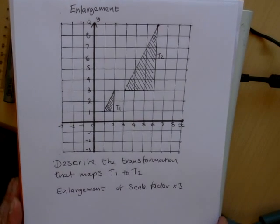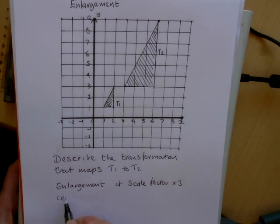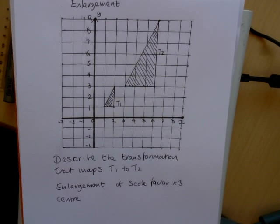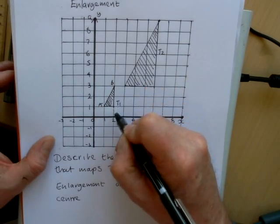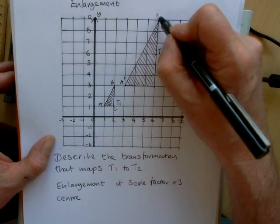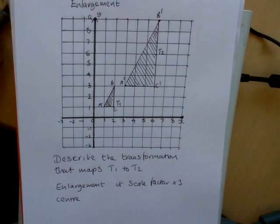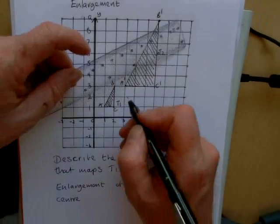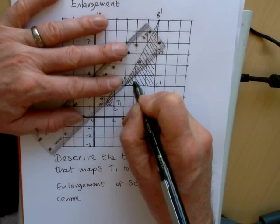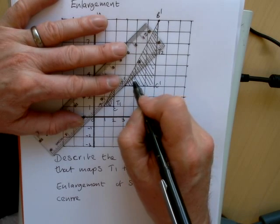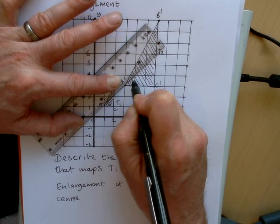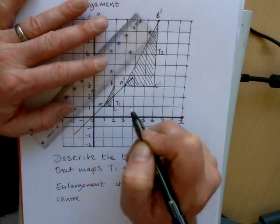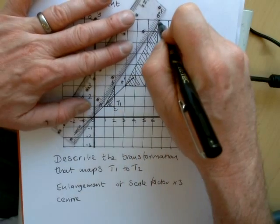Where most people go wrong is the centre of enlargement. Our second triangle is in a particular position because of the centre being used. To find that centre, you need to mark your points A, B, C and then mark the corresponding points A dash, B dash, and C dash. Then draw a line through A dash and A as accurately as you can, and then draw a line through B dash and B.